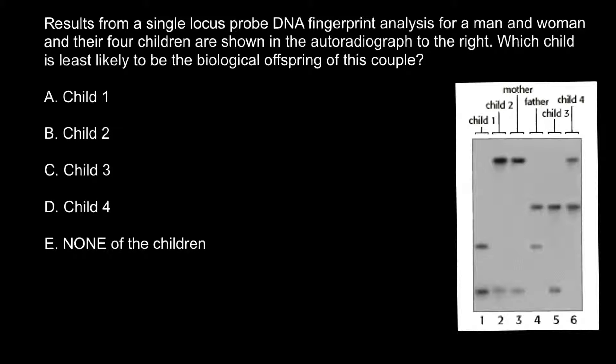Hello and welcome to Nikolai's genetics lessons. Today's problem is: results from a single locus probe DNA fingerprint analysis for a man, a woman, and their children are shown in the autoradiograph to the right. Which child is least likely to be a biological offspring of this couple? There are five answers to choose from. I recommend you pause the video here, try to solve this problem on your own first, and when you're ready, run the video again to compare your answer with mine.